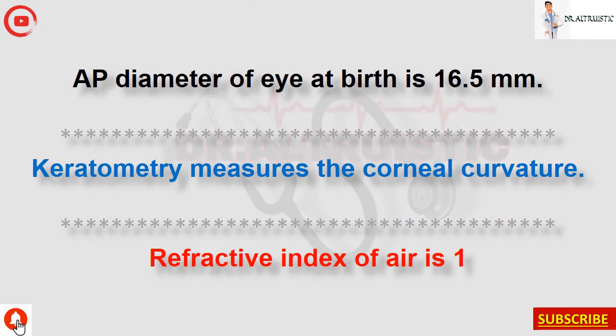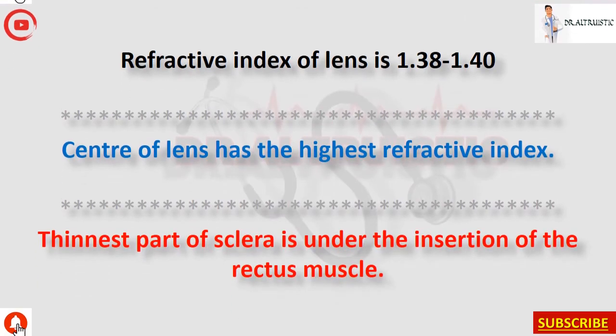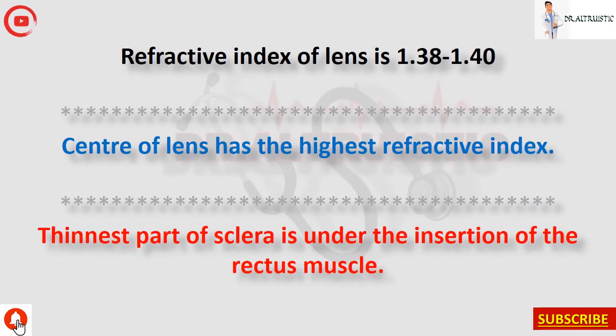AP diameter of eye at birth is 16.5 millimeters. Keratometry measures corneal curvature. Refractive index of air is 1. Refractive index of the lens is 1.38 to 1.40. The center of the lens has the highest refractive index.